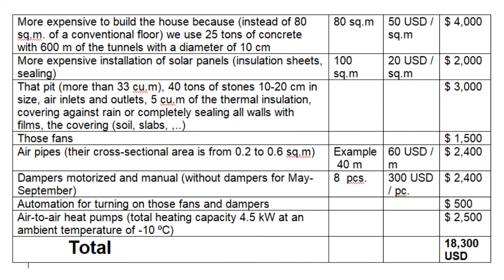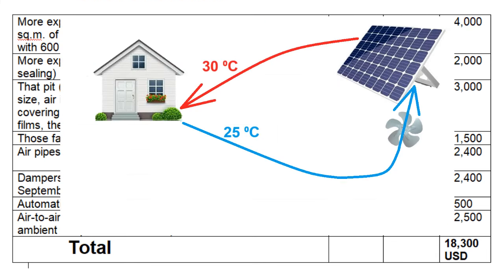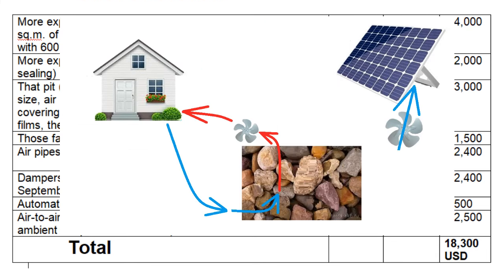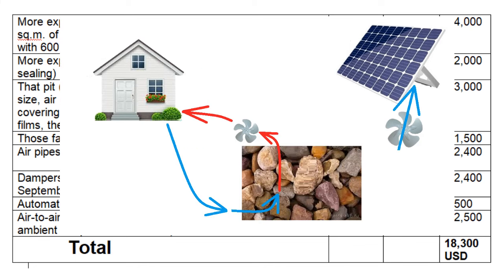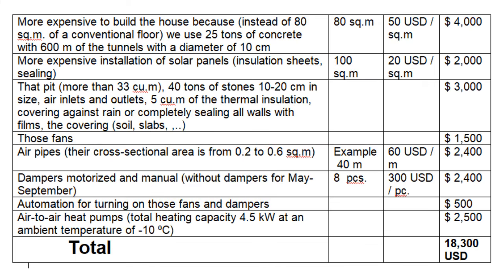This is my rough estimate of the total construction cost of the entire heating system of that house. But it will be one and a half times cheaper if we abandon the two methods where we gave the house air with a temperature of almost 30 degrees Celsius without the heat pump.